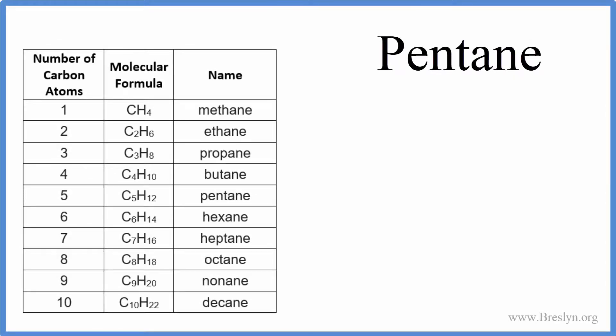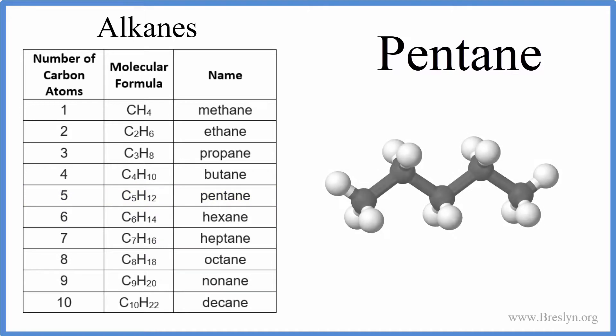To write the formula for pentane, we can recognize that pentane is an alkane — it ends in A-N-E. And for the alkanes, we have this chart here. All of the alkanes are made up of carbon and hydrogen with just single bonds. Pentane is C5H12.